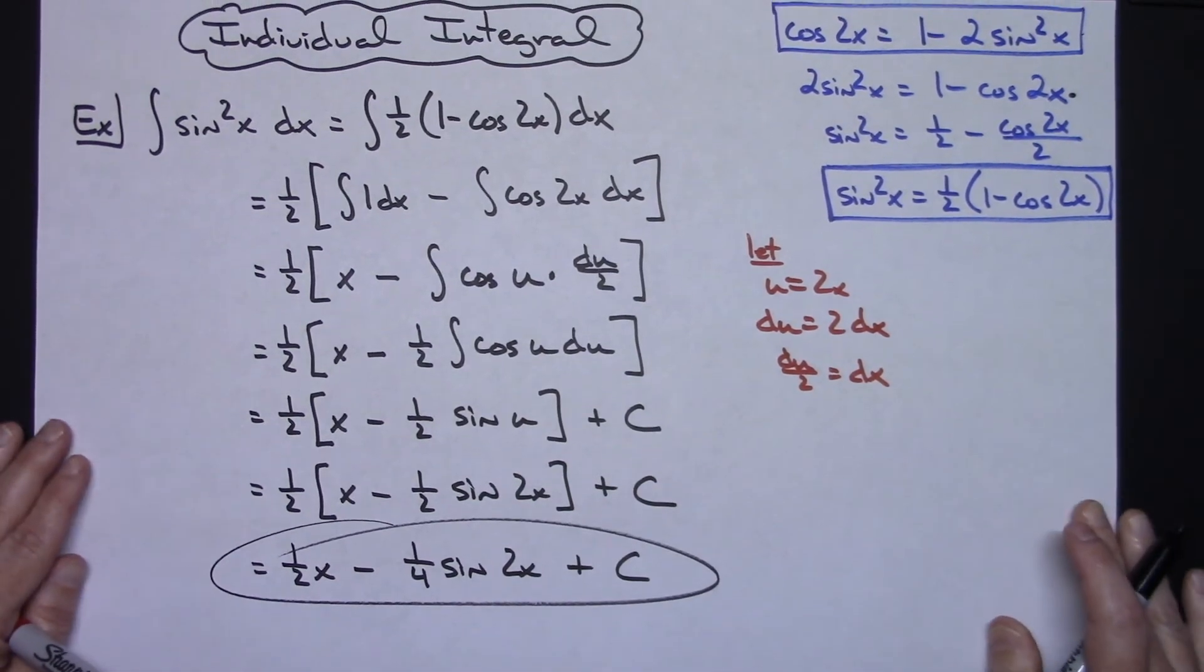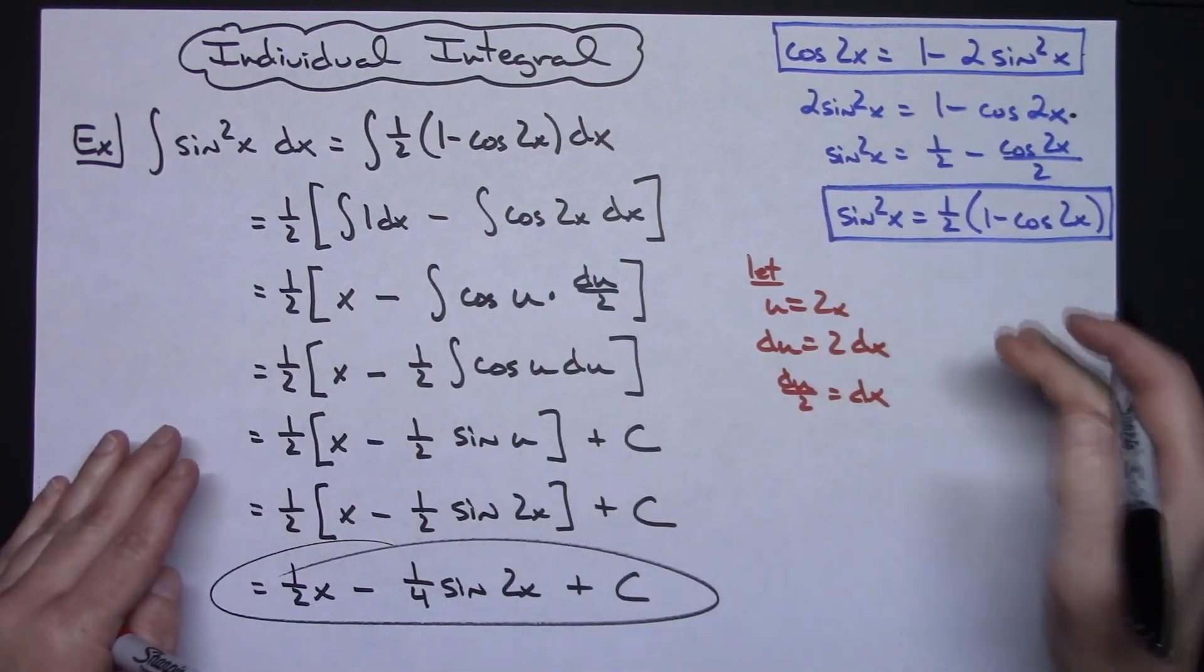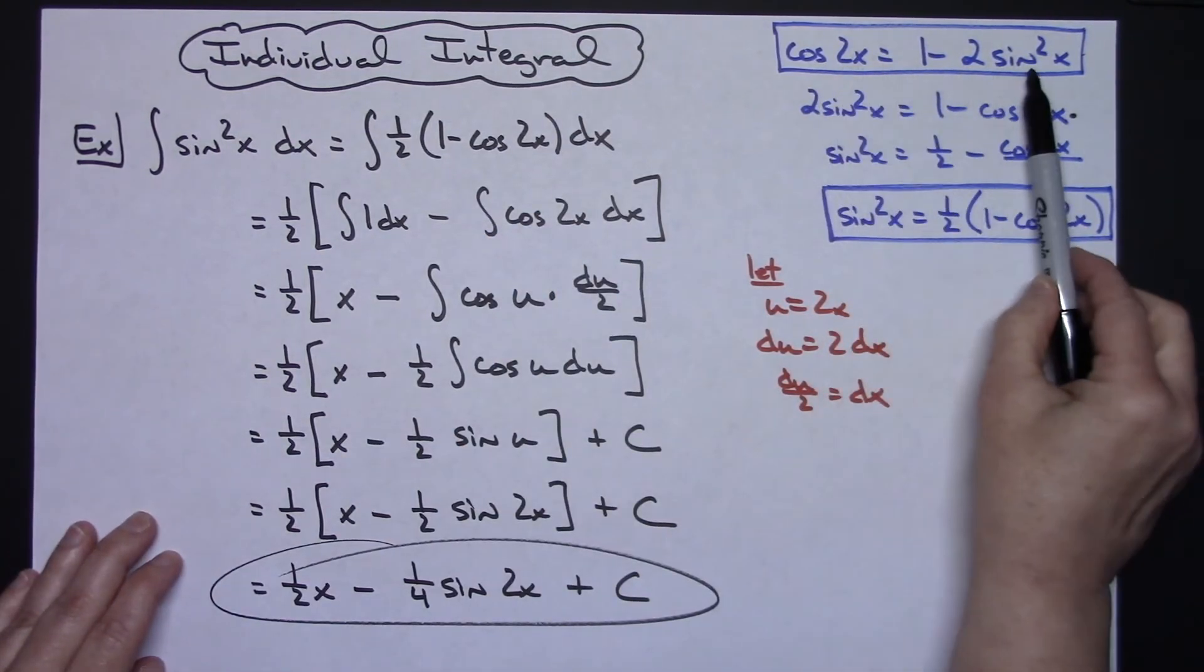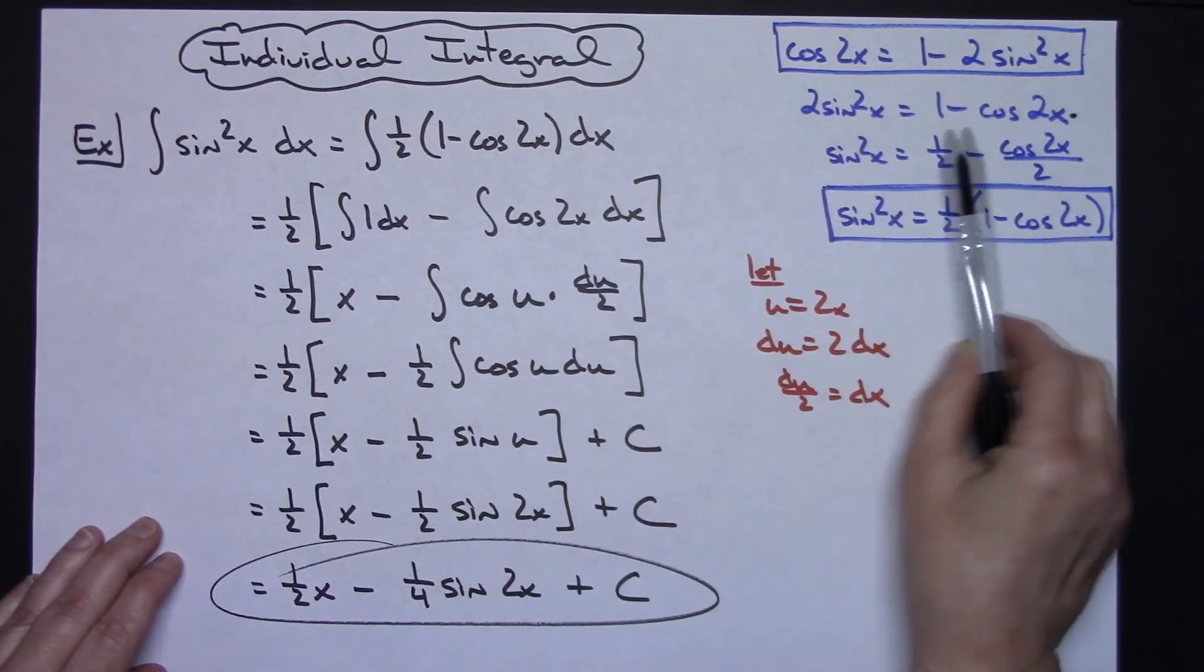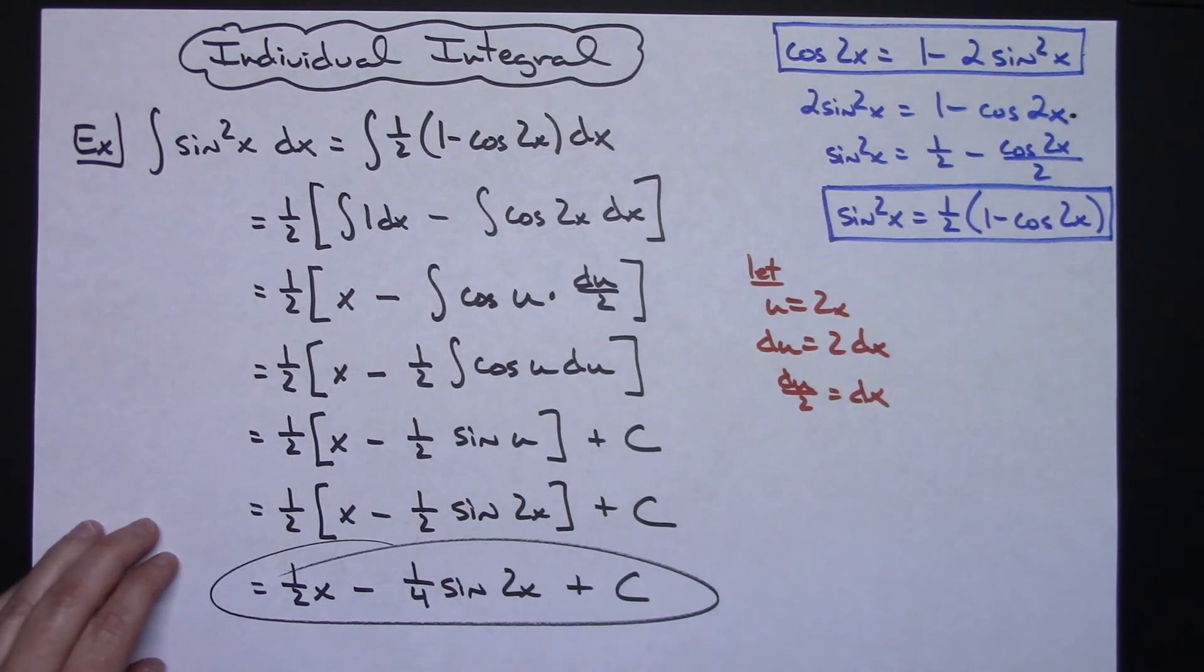So definitely a straightforward nice integral after you make that initial substitution. You've really got to have a handle of your trig identities and how you can take a known trig identity, manipulate it into whatever you might need to make a substitution to make the integral just a little bit easier for you.